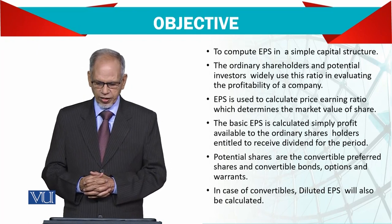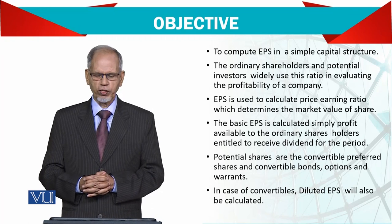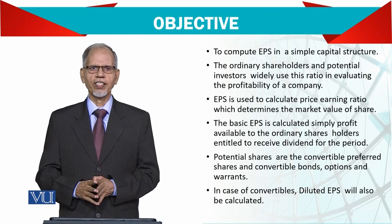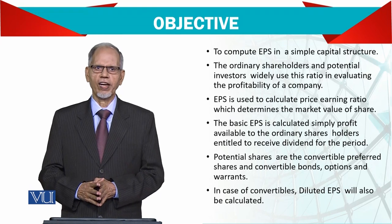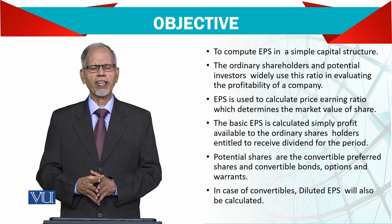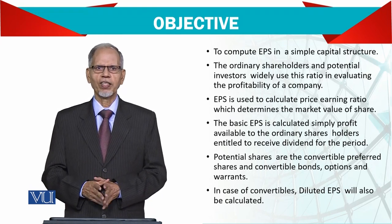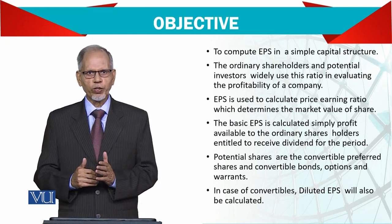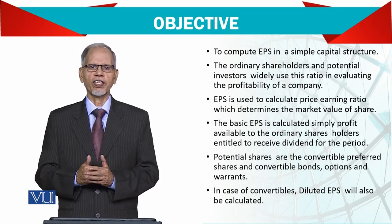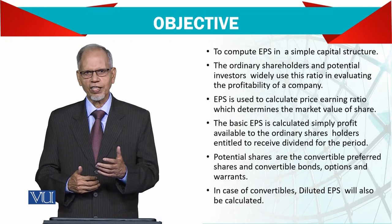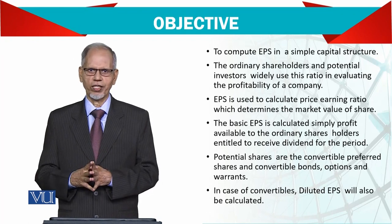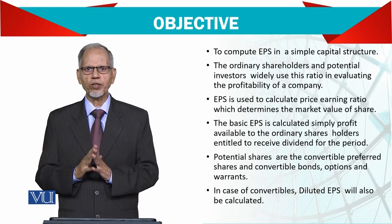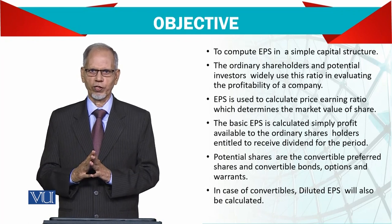In case of convertible securities, diluted earnings per share will also be calculated. If there are potential shares, we need to calculate the diluted earnings per share. However, sometimes while working out the diluted earnings per share, instead of reducing, the earnings per share may actually increase — that is called anti-dilution. In that case, only the basic diluted earnings per share is supposed to be disclosed; anti-dilutive cases are excluded.